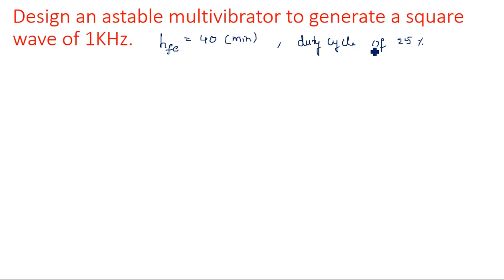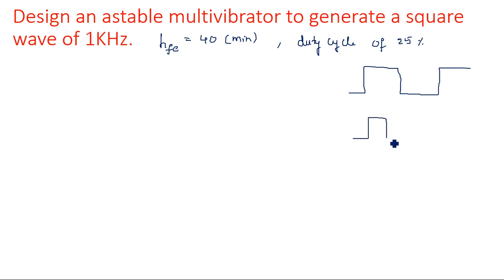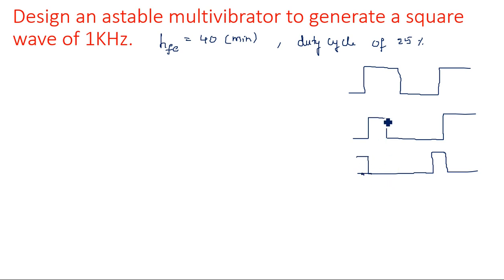What do we mean by duty cycle? Duty cycle determines the amount of on-period and off-period. Suppose if you have a square waveform with equal on and off periods, it has a 50% duty cycle. If the on-period is less and the off-period is more, it is not a symmetrical waveform — on and off are not equal, so the duty cycle would be something like 20% or 30%. The time period remains the same across these waveforms.